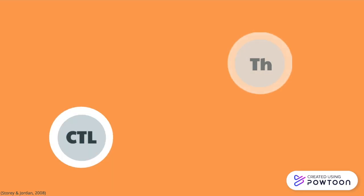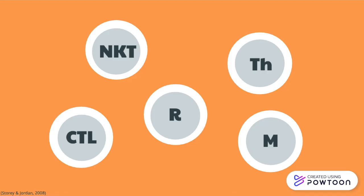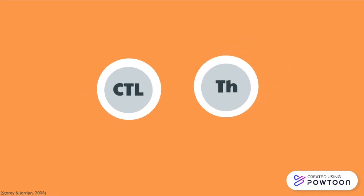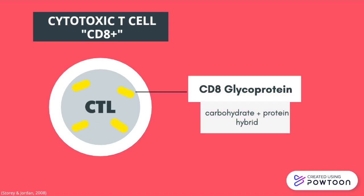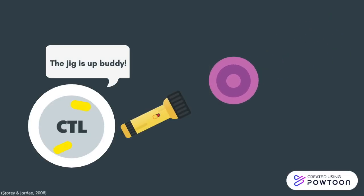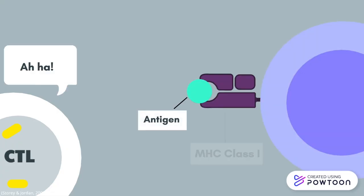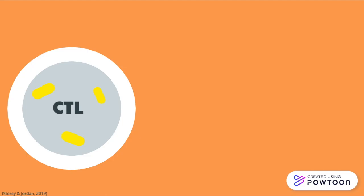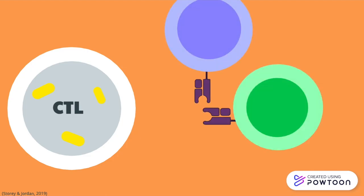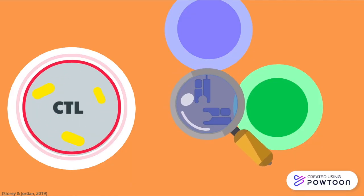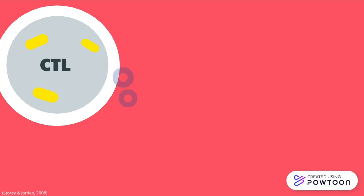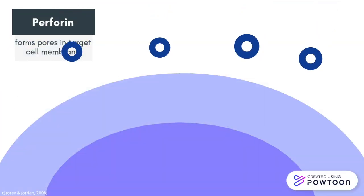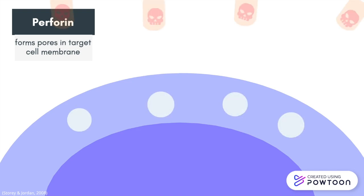Our immune system has multiple T-cells, but we'll focus on two of the most influential: cytotoxic T-cells and helper T-cells. Cytotoxic T-cells are known as CD8+ T-cells because of the CD8 glycoproteins on their surface. They're constantly hunting for infected and cancerous cells, recognizing antigens attached to a molecule called MHC class 1. These cells insert perforins into target cells — pore-forming proteins that make holes in the target cell's membrane.